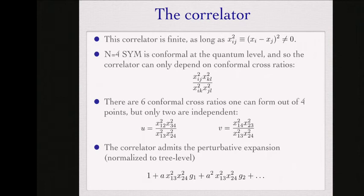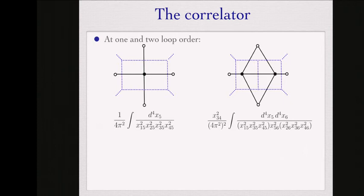There are two independent cross ratios at four points, u and v. If we expand the correlator in perturbation theory at one loop, this is the only object we can write down—there's one integral. At two loops there's also one integral and it's a rotation by 90 degrees.